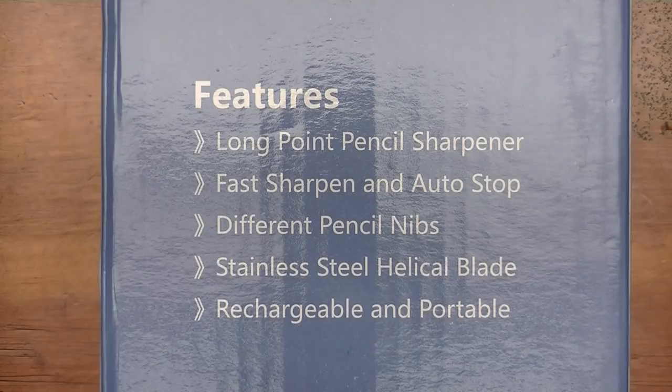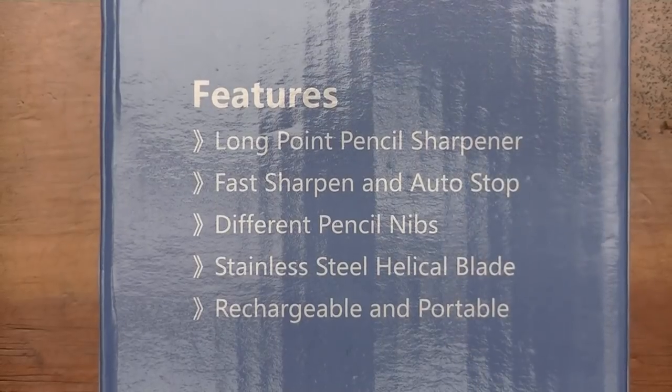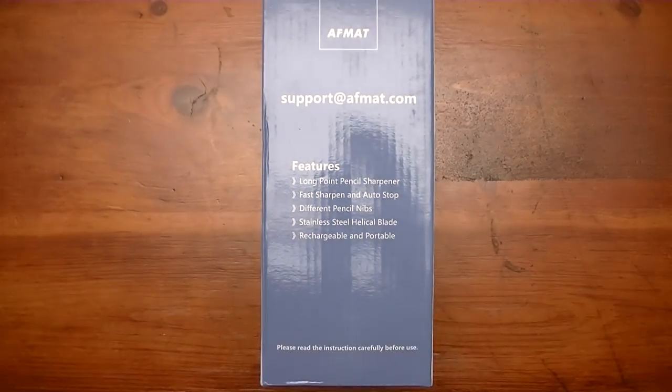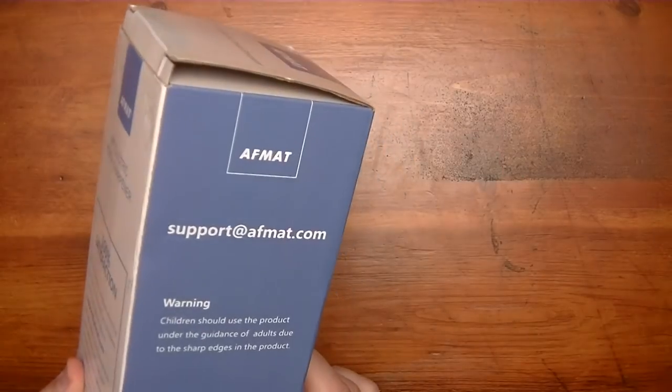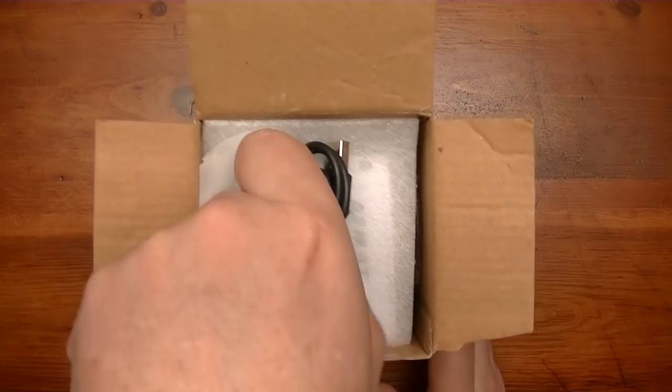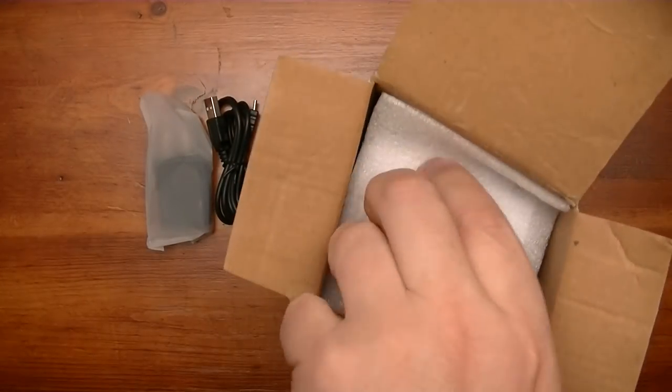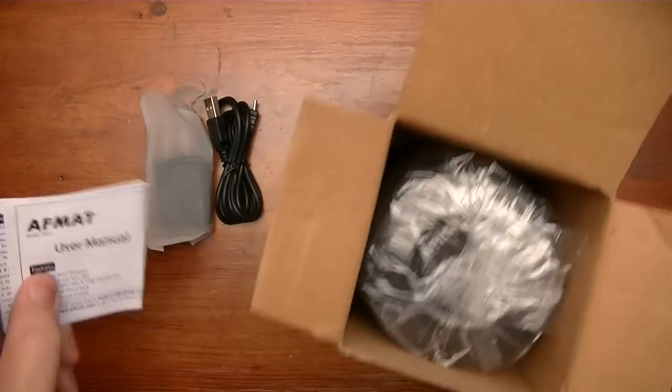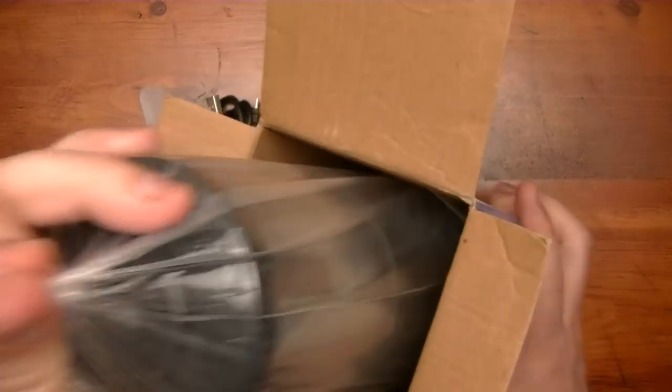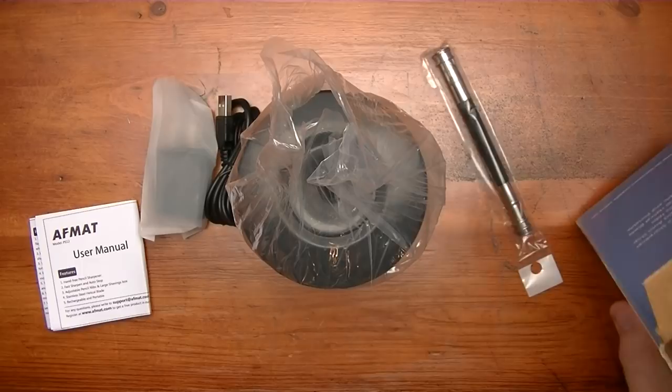Now I have been informed that this thing does some other things other than what they just said on this box. So I think they may have shortchanged themselves by not saying everything. And that is, it's supposed to have an auto eject as well. But let's find out if that is so because you know it's real easy to get products confused because they do offer a whole lot of different sharpeners.